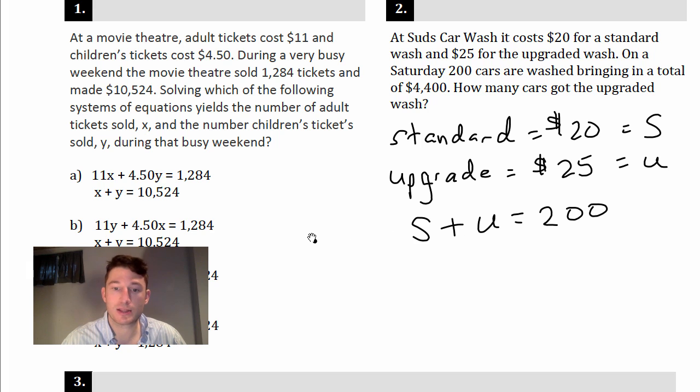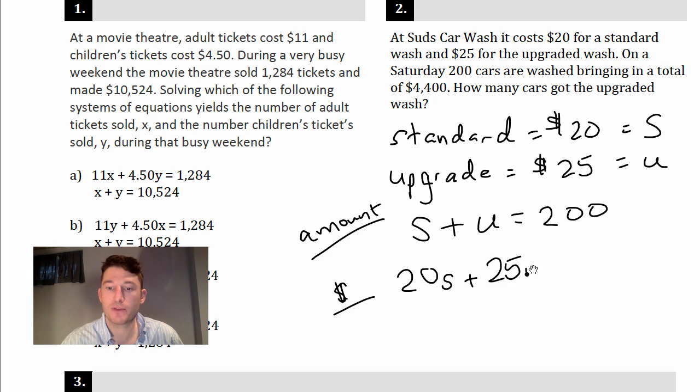200 cars are washed, so some of them are standards, some of them are upgraded, but they should total 200. That's our amount equation, just like we did before. Let's look at our price equation. So in our price equation, the standard ones cost 20 bucks, so that's 20S plus 25U equals $4,400.